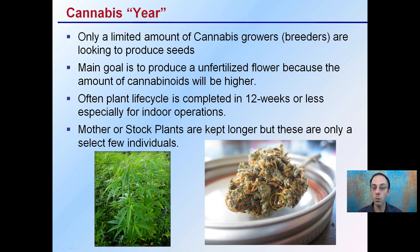The main goal is to produce unfertilized flower because the amount of cannabinoids will be much higher. The plant cycle is often completed in 12 weeks or less — not 12 months — especially for indoor operations. Mother or stock plants are kept longer, but these are only a select few individuals.